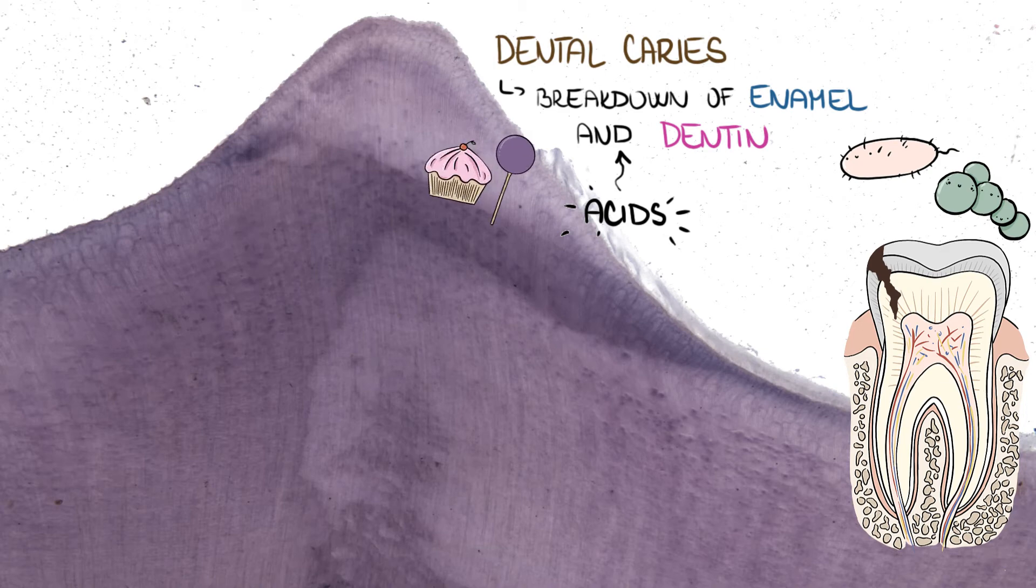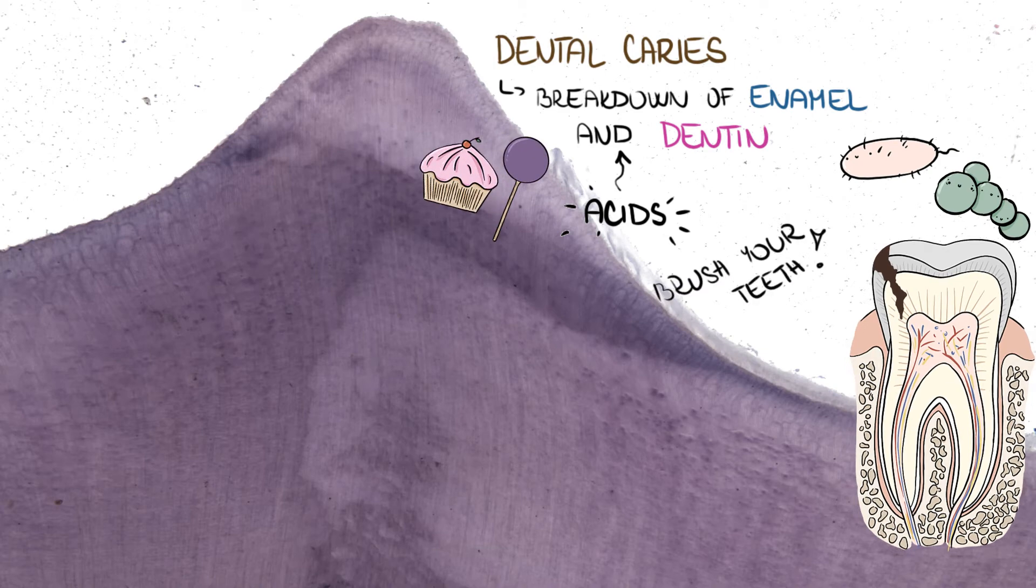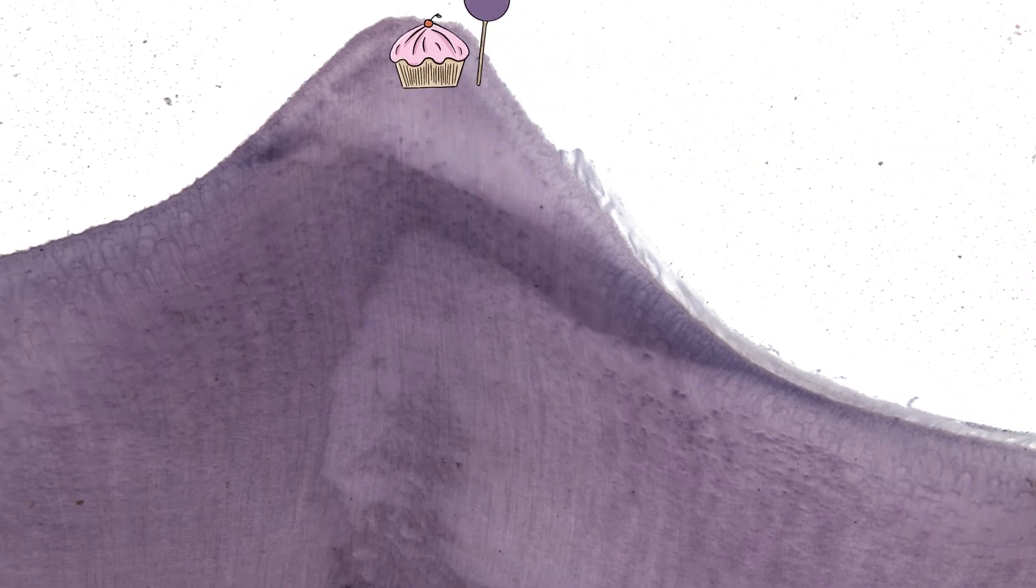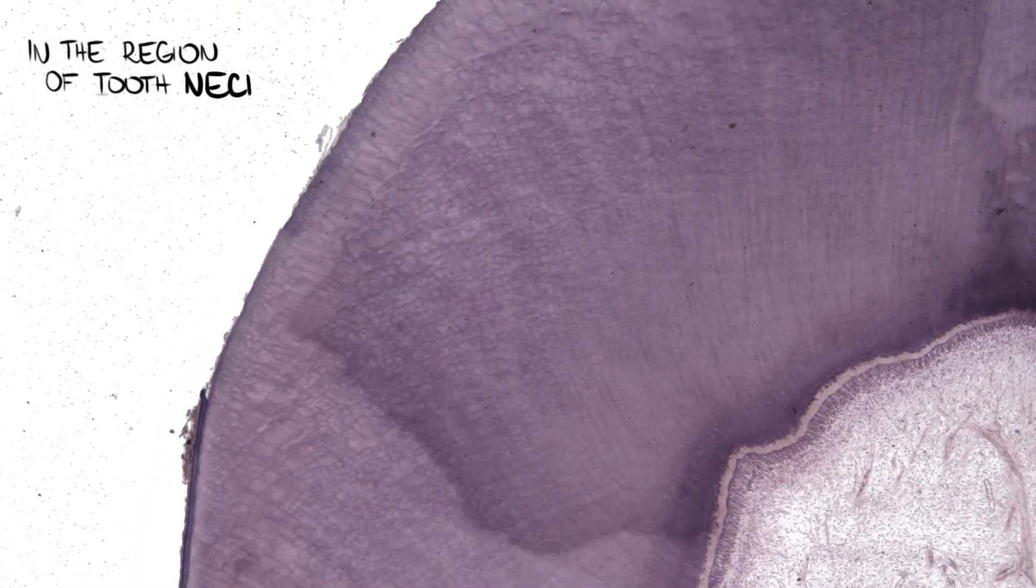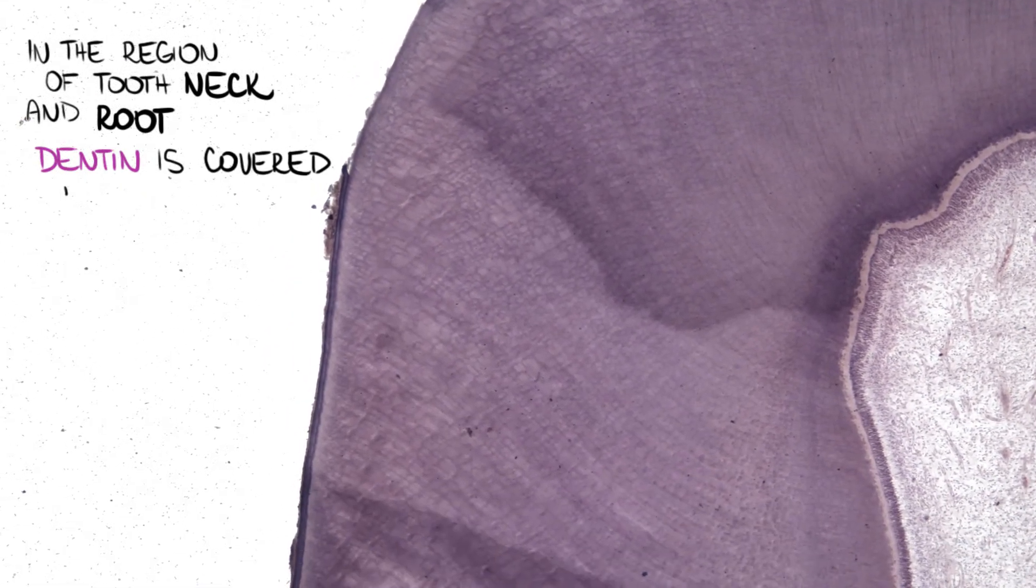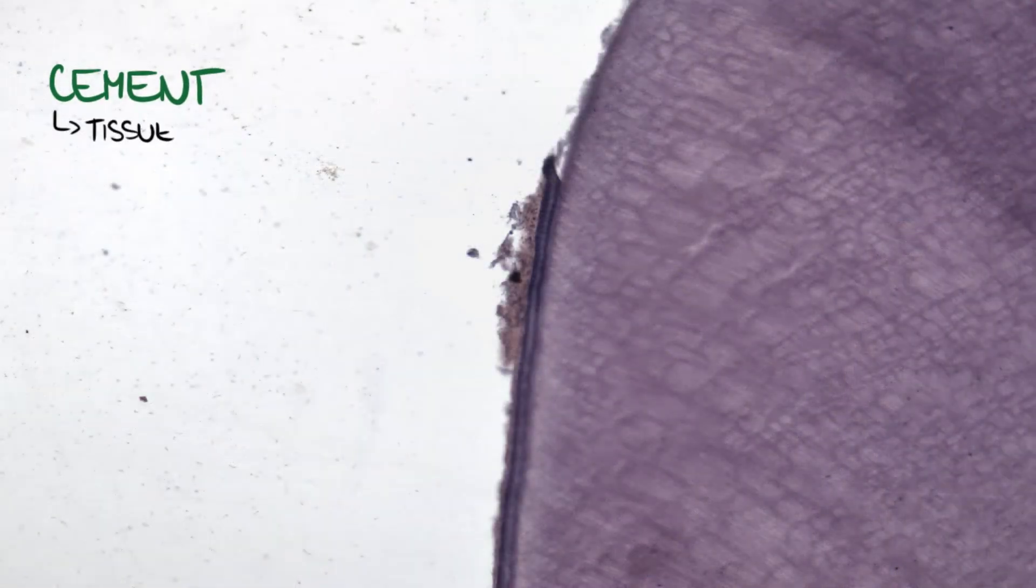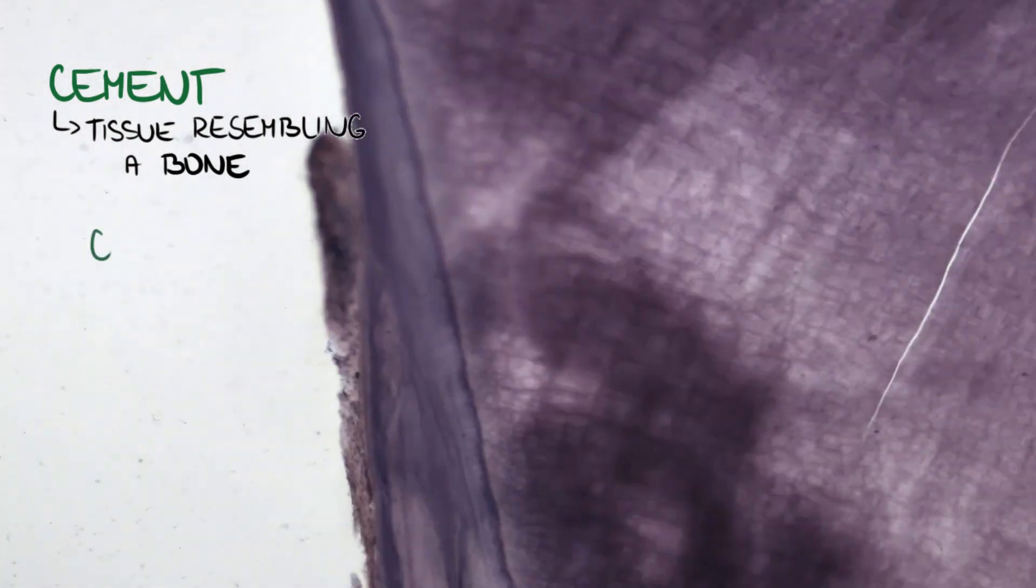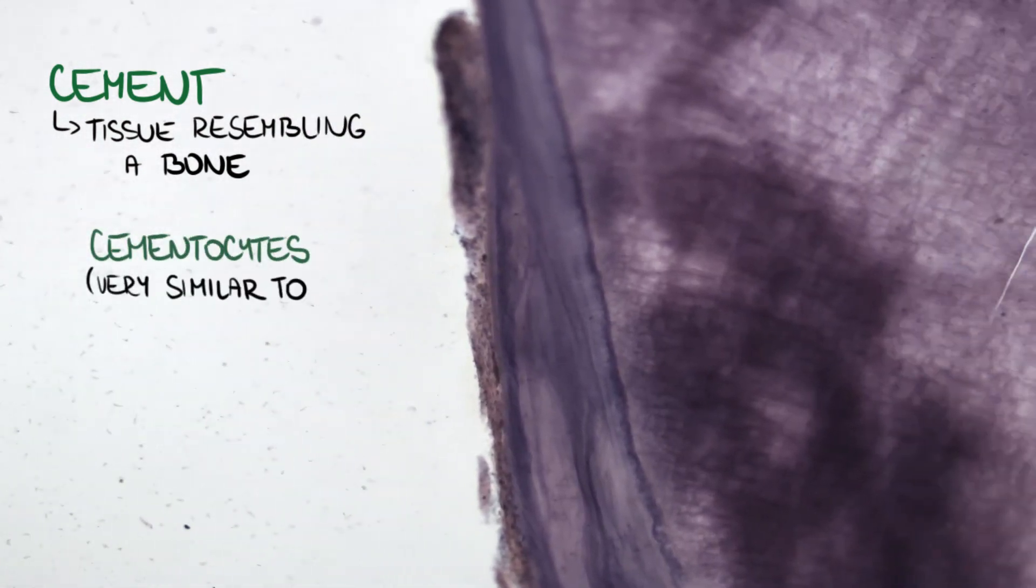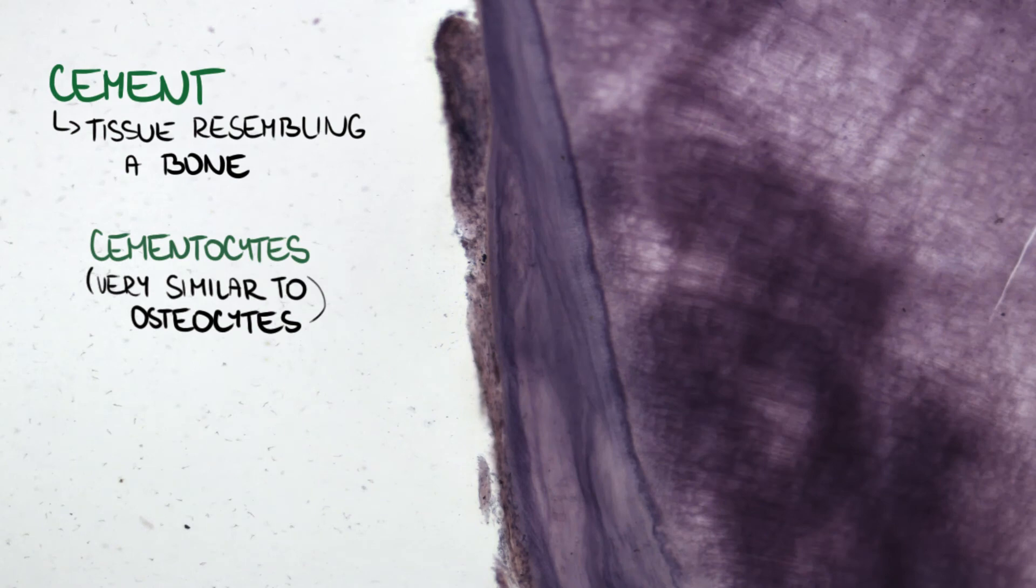In the region of tooth neck and root, dentin is covered by a substance called tooth cement. It's a tissue resembling bone. In thicker areas it contains cementocytes, which are very similar to osteocytes. In the picture we can only see empty lacunae where cementocytes used to be.